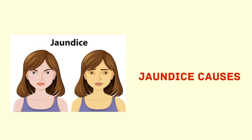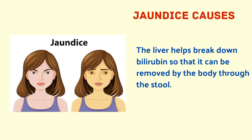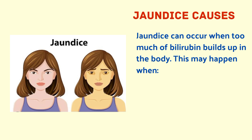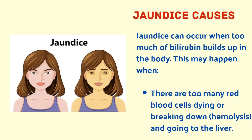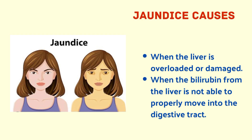Now let us see the causes of jaundice. A small number of red blood cells in your body die each day and are replaced by new ones; this process produces bilirubin. Bilirubin travels through your bloodstream to the liver, which helps break it down so it can be removed through the stool. Jaundice can occur when too much bilirubin builds up — when there are too many red blood cells breaking down, when the liver is overloaded or damaged, or when bilirubin cannot properly move into the digestive tract.